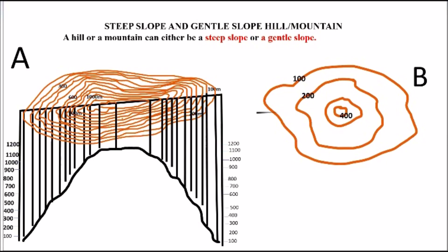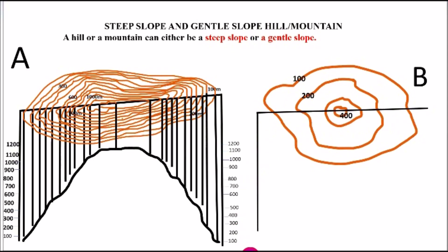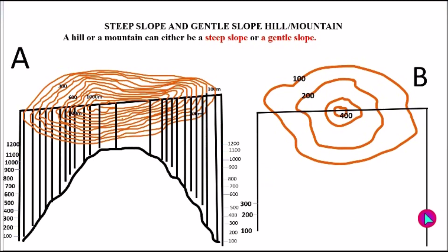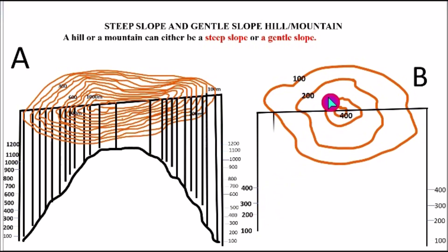Now apply the same procedure on contour B. With contour B, the contours are far apart. You draw the horizontal line to cut across all the contours, then draw your vertical axis at both the left and the right sides. You calibrate them according to the contour's numbering. Contour 100 is here, 200 is here, 300 is here. Then you trace from the horizontal line — that is each of the contours — to the corresponding markings.